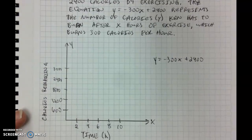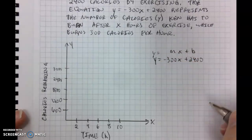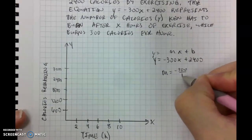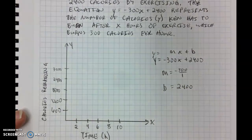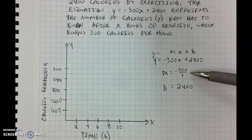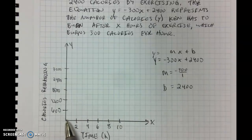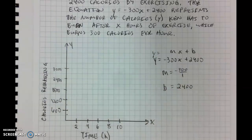Just like in our 4.3a, we want to identify our slope and our y-intercept. If we rewrite y equals mx plus b, we can see that our value for m is going to be negative 300, written as a fraction: negative 300 over 1. And our value for b is going to be 2,400. With these values, we're going to have to change up the scale of our graph — counting up by 300s on our y-axis, so every grid line represents 300 calories, and every grid line on our x-axis represents one hour.